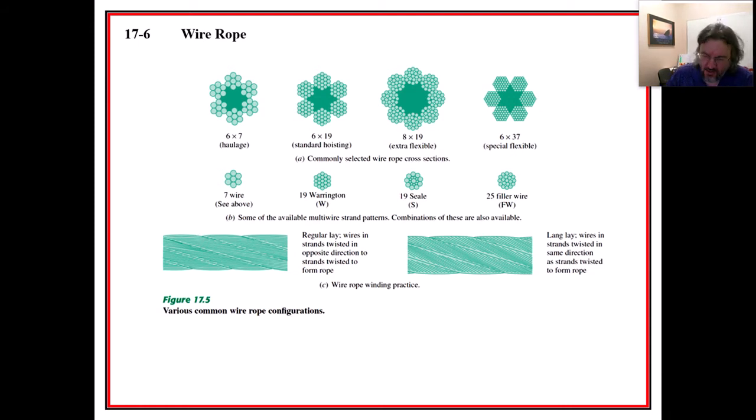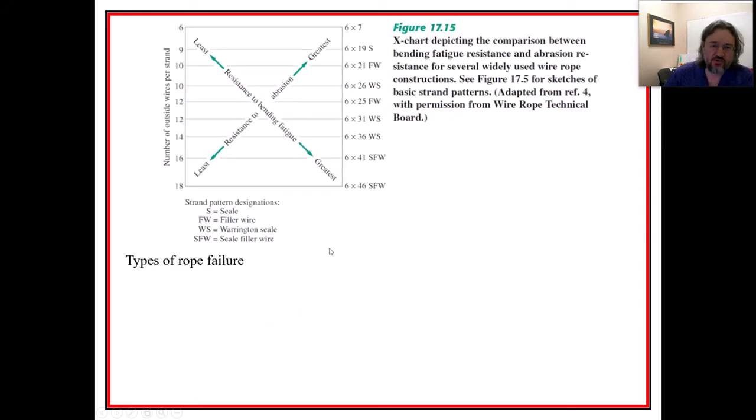One of the things that's not great about lang is that as it rubs over things, it can cause abrasion, obviously to the thing that it's running over, but also to the individual wires. And that brings up like one of the ways that things fail, or the ways that wires fail, that we have to consider when trying to choose, right.